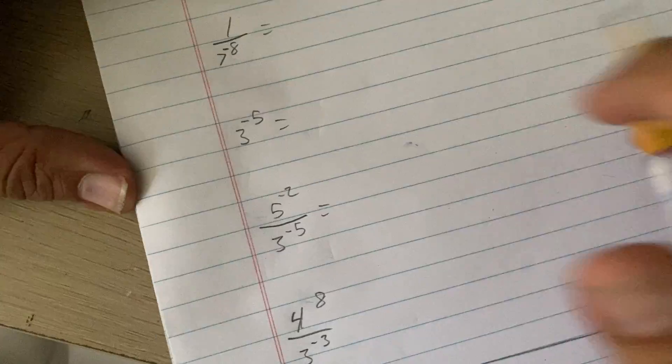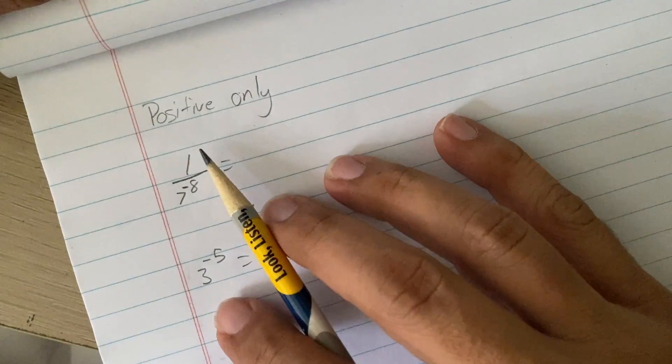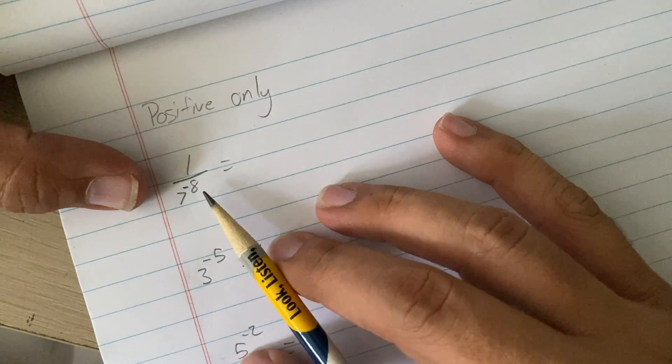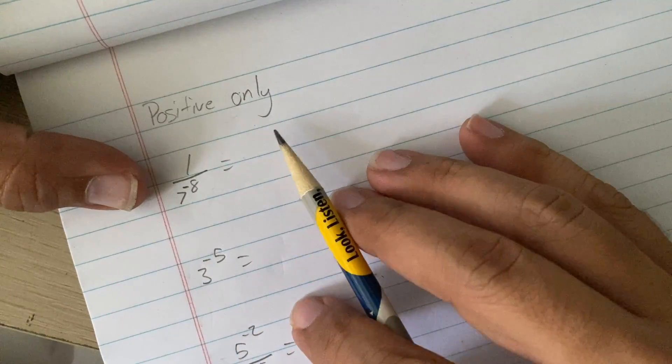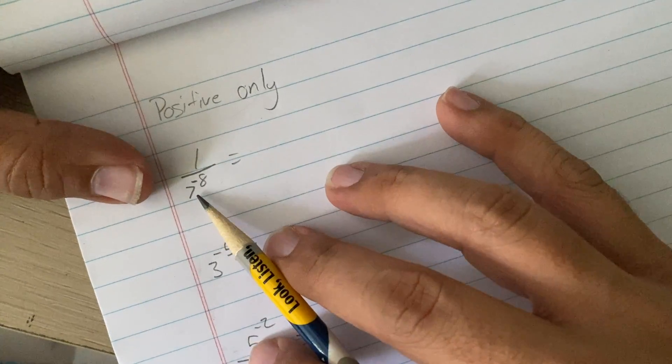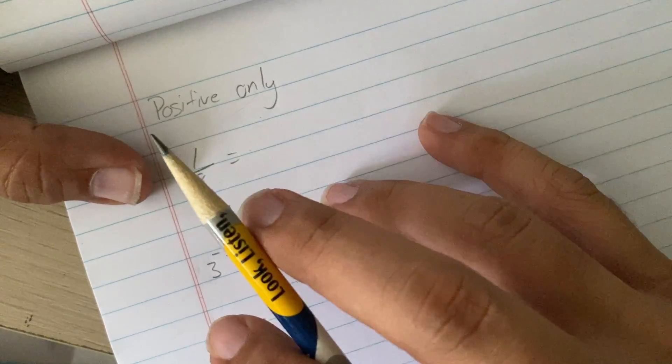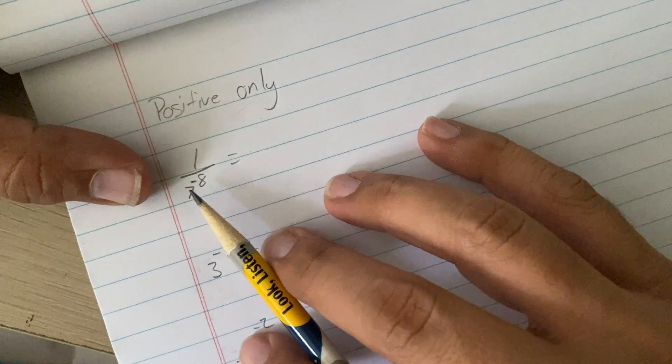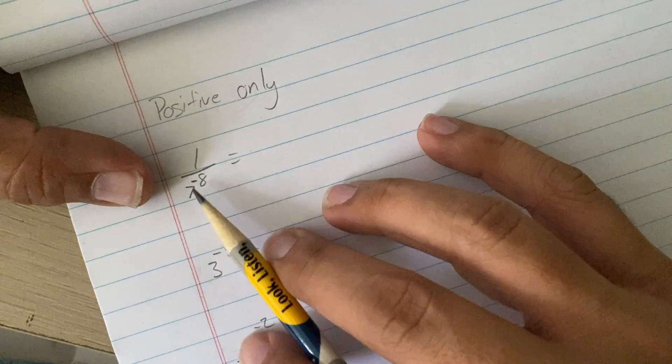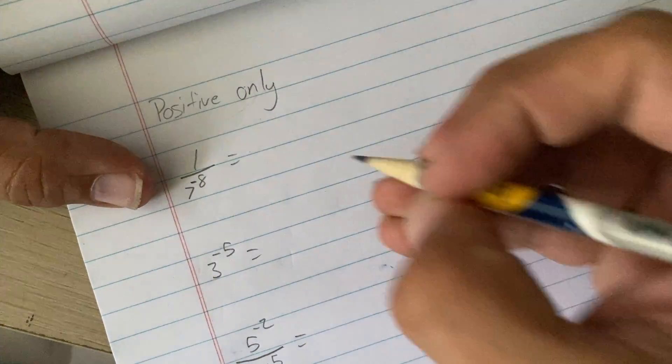All right, and now the next thing. For this one, if we get answers that are negative, I'd like you to change them into positive. So, the negative exponent is constantly telling you, I'm in the wrong place. I'm in the wrong side of the fraction. So, if the bottom is the wrong side of the fraction, that means it belongs on the top.